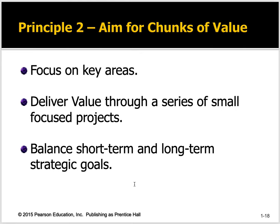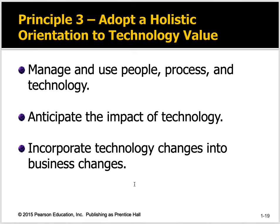Third, aim for chunks of value — look for key areas and deliver value through a series of small focused projects. If you have a long project, phase it so you have short-term projects that all build up to a long-term result. Fourth, adopt a holistic orientation for technology value — meaning people, processes, and technology. You will fail if you don't address all three. The people part is probably the most critical. You have to have the best business process possible, and technology that enables that best business practice, but without the people it doesn't happen.